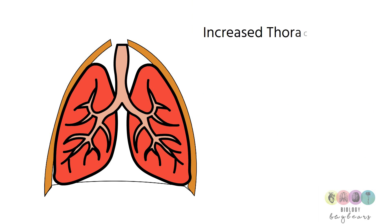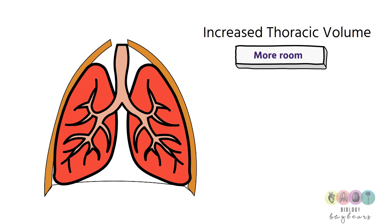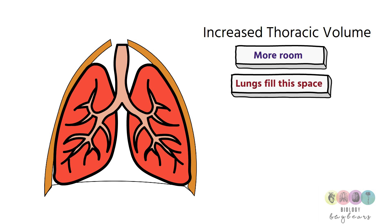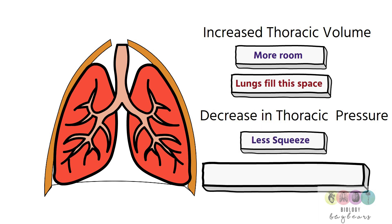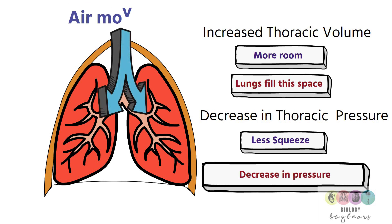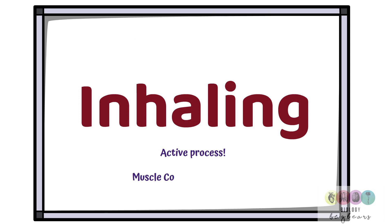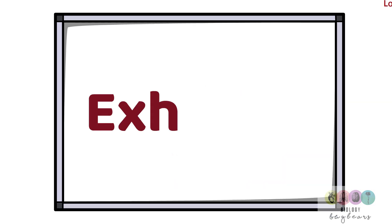The rib cage moved up and out because the intercostal muscles contracted, and the diaphragm contracted and flattened. This increased thoracic volume — making much more room or space in the thorax — and the lungs, moving with the rib cage and the diaphragm, fill this space. There is a decrease in thoracic pressure and therefore also a decrease in the air pressure inside the lungs, so air rushes into the lungs, moving from high pressure outside to low pressure inside. Inhaling is therefore an active process — there is muscle contraction involved.